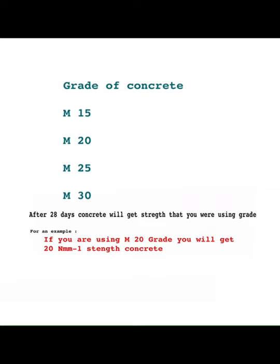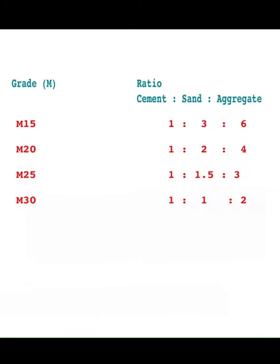You can see grades of concrete such as M15, M20, M25, M30, etc. The concrete grade is decided by the ratio of materials. M15 concrete has a ratio of 1:3:6, M20 concrete is 1:2:4, M25 concrete is 1:1.5:3, and M30 concrete is 1:1:2.